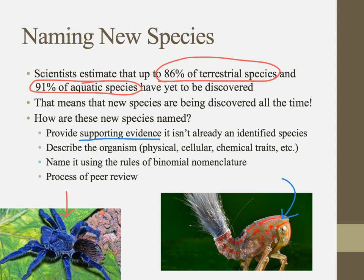That's more work than you might think. You have to do a thorough job of describing the organism in terms of its physical traits, cellular traits, chemical traits, and probably DNA sequencing. You also have to name it using the rules of binomial nomenclature. Then at the International Congress of Zoology, your naming process has to undergo peer review. So naming a new species is quite a lot of work.